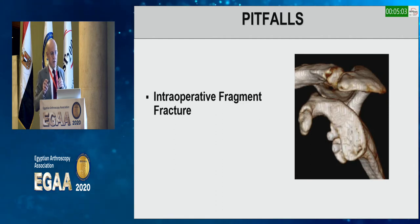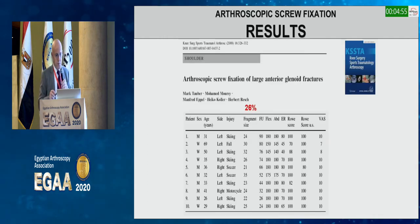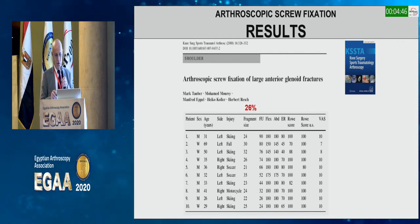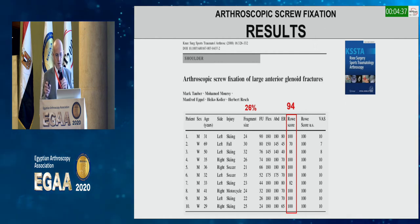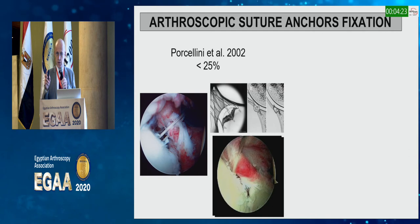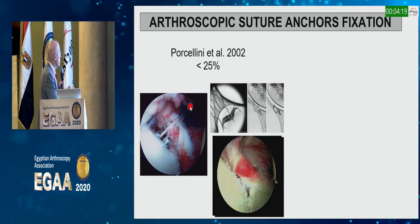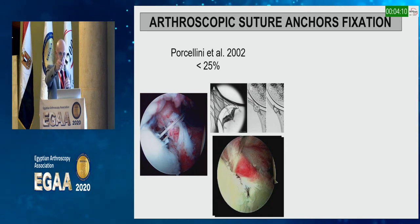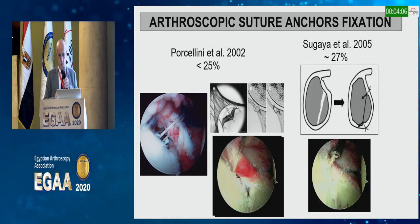Pitfalls: screw malpositioning is detrimental — you may cause severe humeral head cartilage damage — and intraoperative fragment fracture is a nightmare. Porcellini described the suture anchor technique and after his first series recommended acute rather than chronic treatment. Again, if you have the labrum intact, reducing the labrum to its original position automatically reduces the bone fragment. Sugaya describes a similar approach, even up to 27 percent bone loss. The difference between 25 and 27 percent is not clinically meaningful.